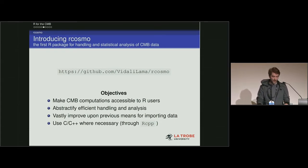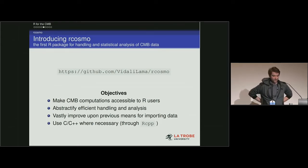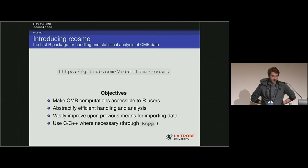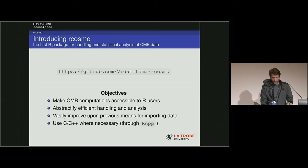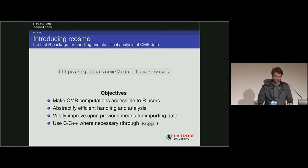rCosmo is the first R package for analysis of the CMB. The goal is to make these CMB computations accessible to all R users by abstractifying the efficient handling and analysis of the data, and vastly improving upon previous means for importing data. We've achieved that — I'll show you in a moment.